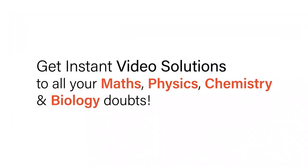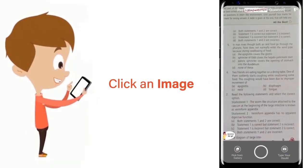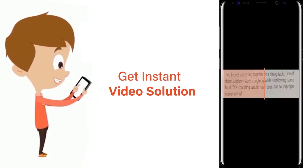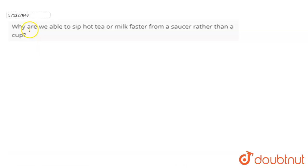With Doubtnut, get instant video solutions to all your maths, physics, chemistry, and biology doubts. Just click the image of the question, crop the question, and get instant video solution. Download Doubtnut app today. Hello everyone, the question is: why are we able to sip hot tea or milk faster from a saucer rather than a cup?